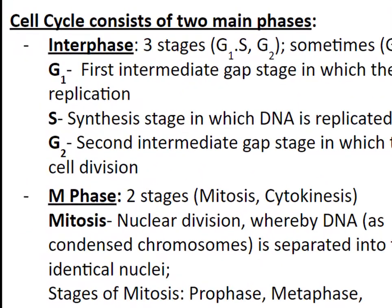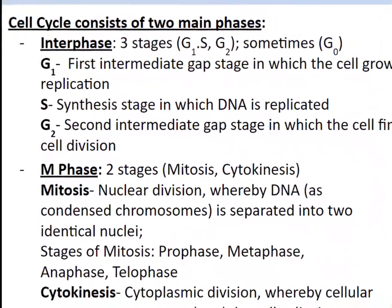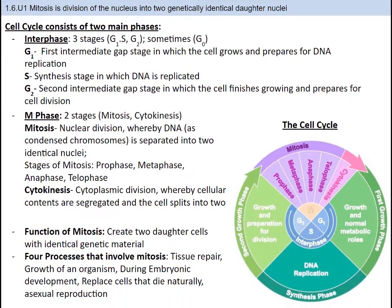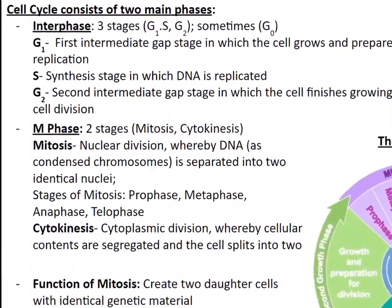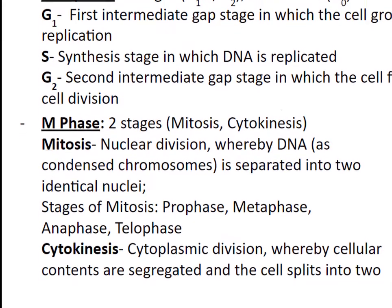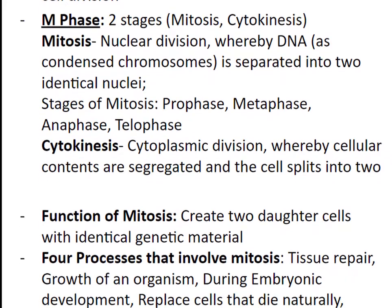Interphase has three typical stages: G1, S, and G2. Sometimes a fourth stage, called G0, comes into play. The G1 phase is the first intermediate gap phase in which the cell grows and prepares for DNA replication. The S phase is the synthesis phase, in which DNA is replicated. The G2 phase is the second intermediate gap stage in which the cell finishes growing and prepares for cell division. The M phase consists of mitosis and cytokinesis. Mitosis is responsible for DNA separation into two nuclei, and cytokinesis results in two identical daughter cells. The whole point of mitosis is to create two daughter cells with identical genetic material.